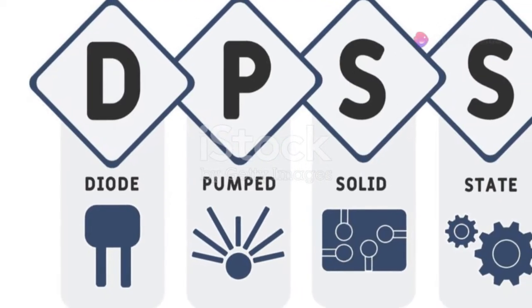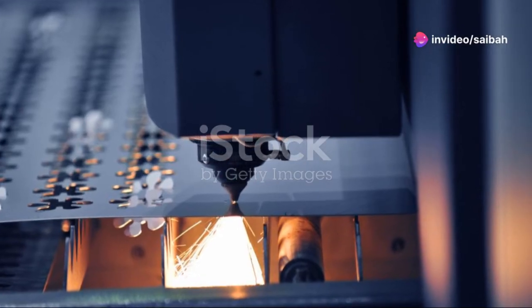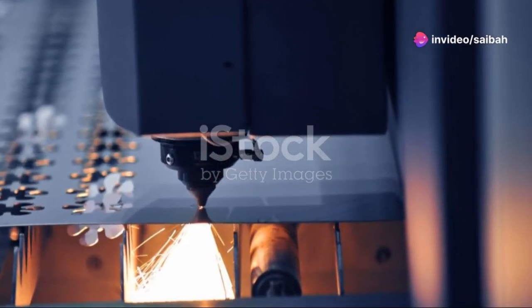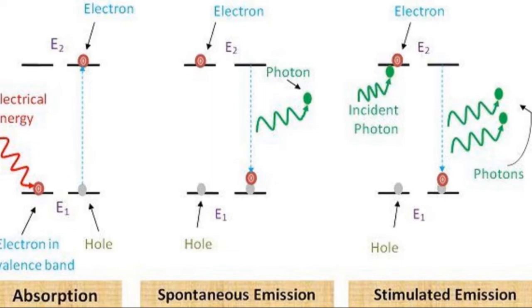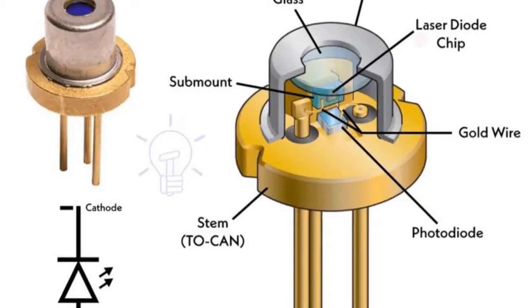Now the star of the show, stimulated emission. Here, photons from an external light source hit the excited electrons, causing them to release extra photons. This means one photon can trigger the emission of another, amplifying the light.